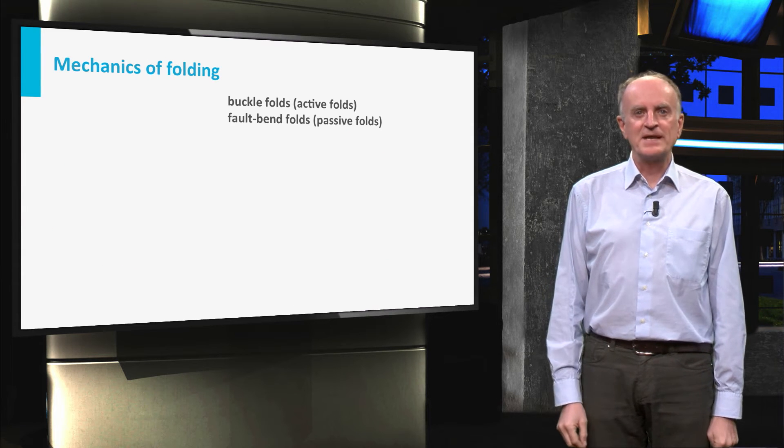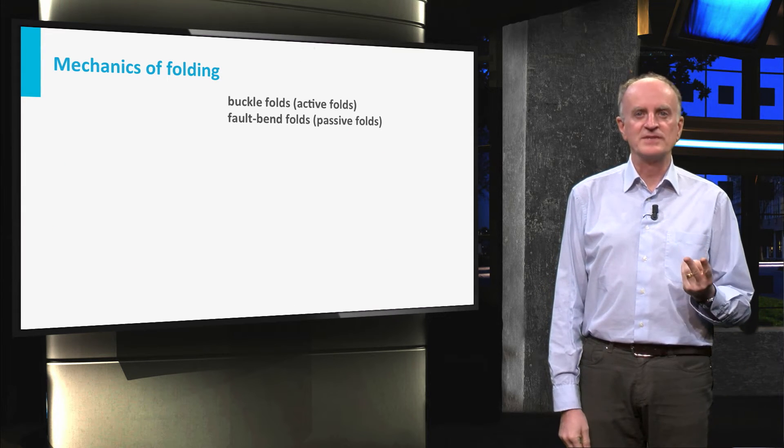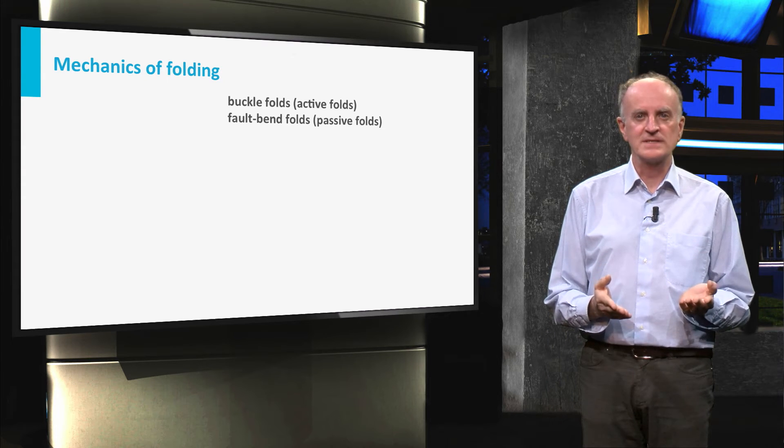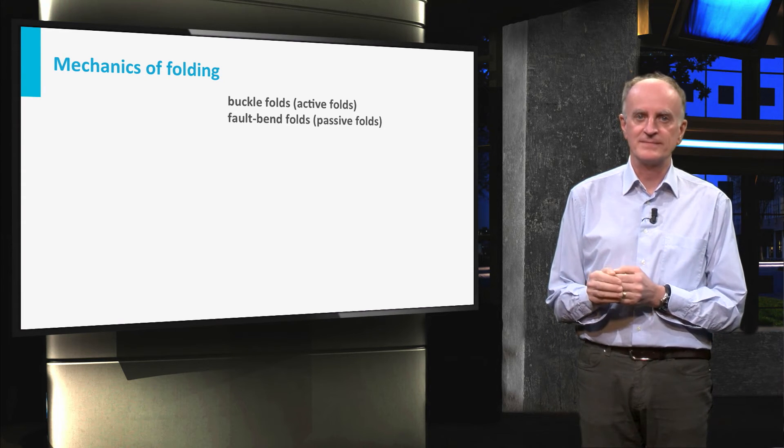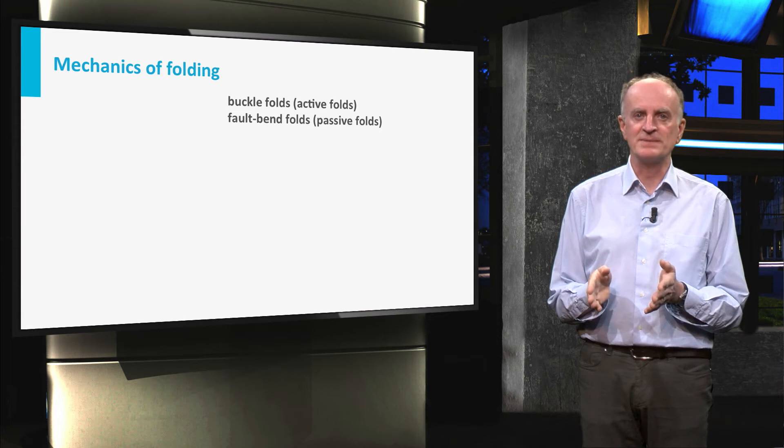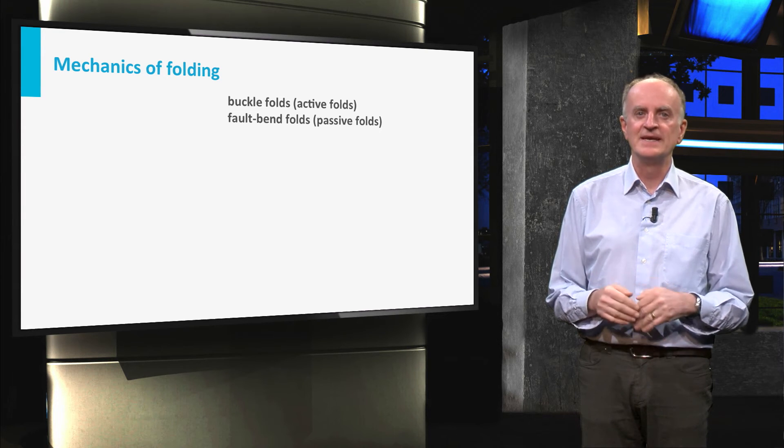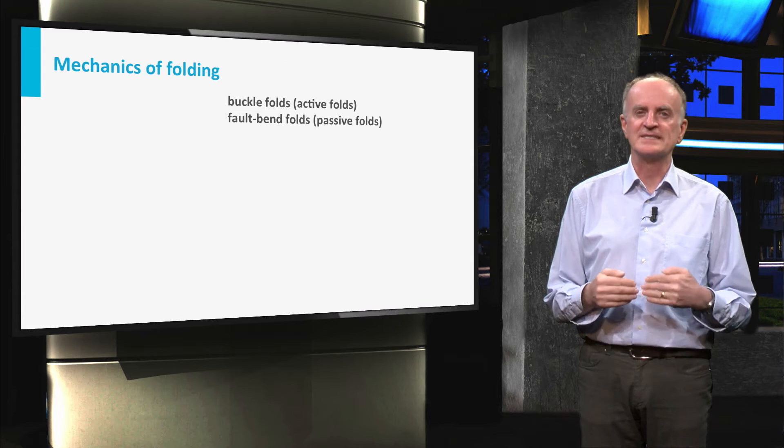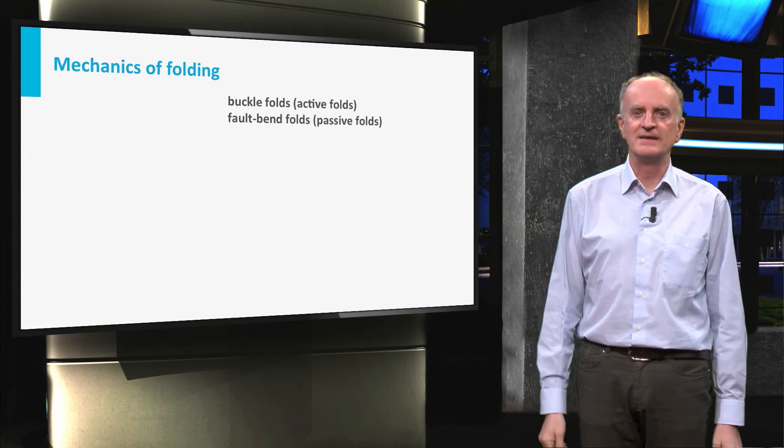From a mechanical point of view, we distinguish two different types of folds: buckle folds and fold-bend folds. If you understand the mechanics of the specific folds you are interested in, it is much easier to predict its structure, properties and evolution.